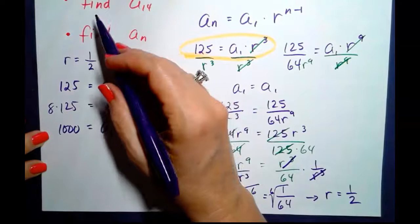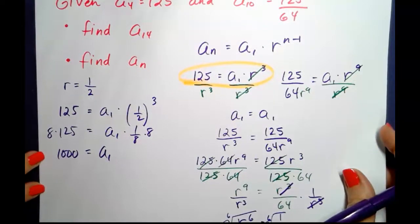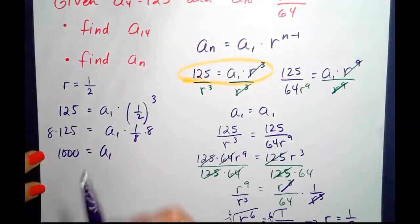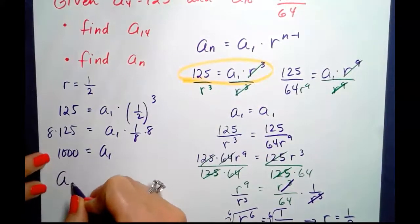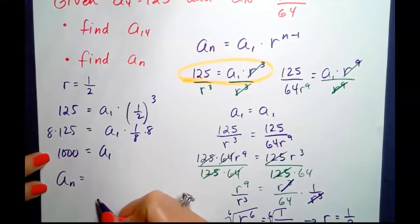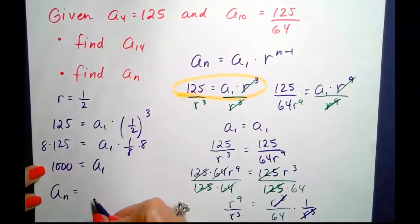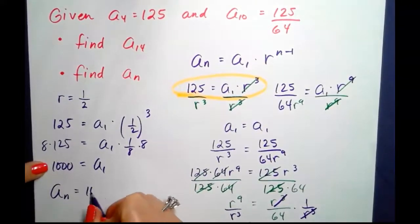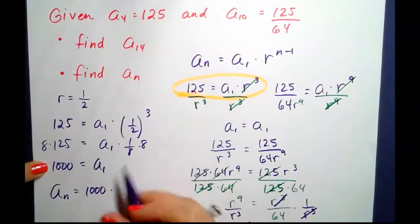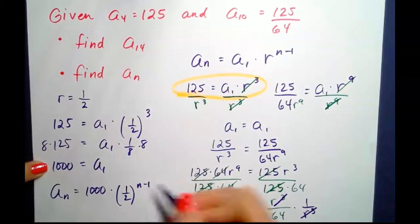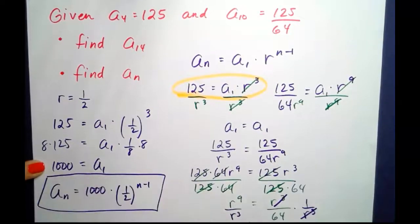We're trying to find a sub 14 and a sub n. We now know a sub 1, we now know r, now we can handle that second bullet point. A sub n for this given information is going to be a sub 1, which is 1000, times r, which is 1 half, to the n minus 1. So there is one of the answers we're looking for.